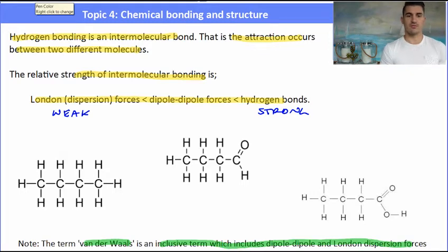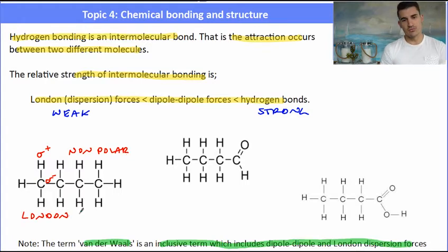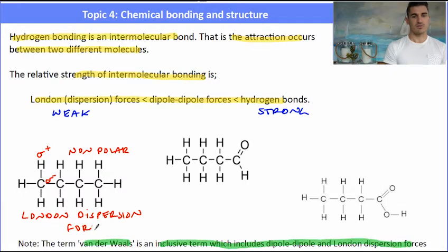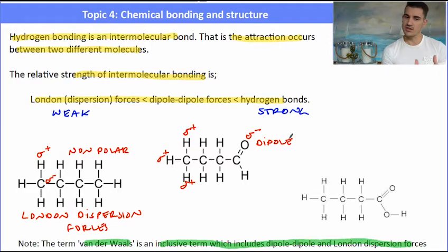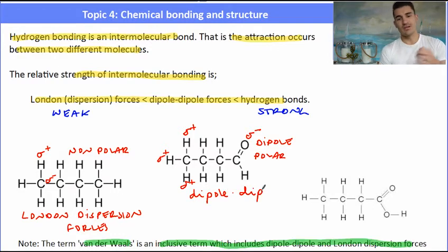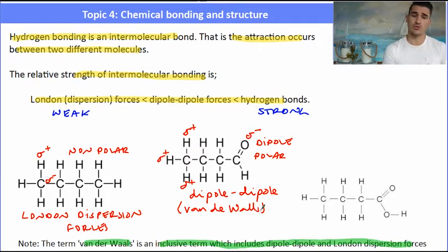Here we have three molecules, all very similar in terms of number of carbons. We can decide which has the greatest intermolecular bonding by looking at the structure. The first one has carbons surrounded by hydrogens — a non-polar molecule — so it can only exhibit London dispersion forces, giving it the weakest intermolecular bonding. The one in the middle is an aldehyde with a dipole — it has a large region of positive charge from the hydrogens and a negative oxygen — so it's polar and will exhibit dipole-dipole interactions as well as London dispersion forces. We could say it has van der Waals forces.